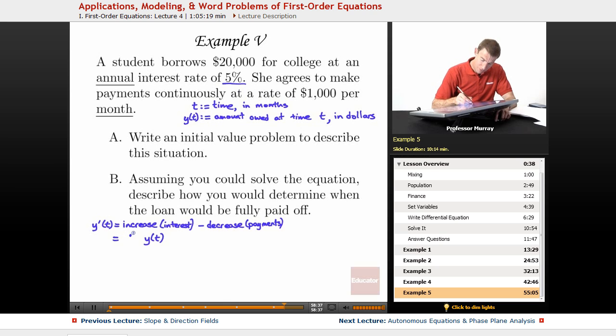So 5% is 0.05. But we're measuring things in terms of months. So every month her interest rate would be 1/12th of that. So I'm going to put 0.05 divided by 12 there.